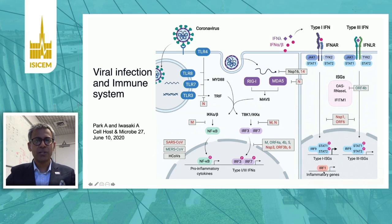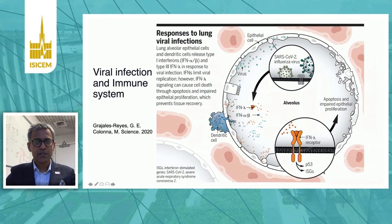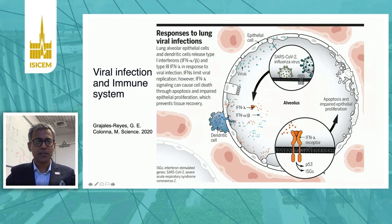In viral infection, type 1 interferons such as interferon alpha and beta, and type 3 interferons such as interferon lambda, are important both for pathogen clearance and for pathogenesis of the viral infection. Dendritic cells and epithelial cells release interferons, which limit viral replication — especially type 1 interferon alpha and beta. However, type 3 interferon lambda can increase apoptosis, epithelial proliferation, and tissue injury.